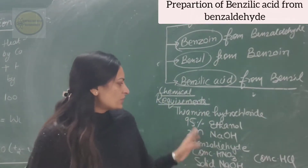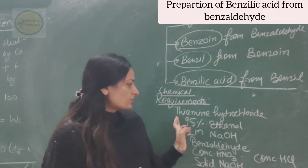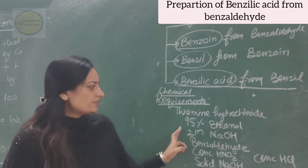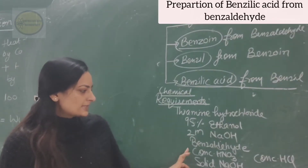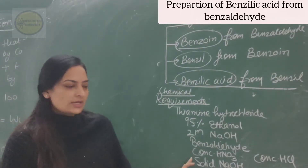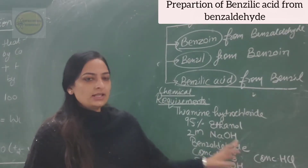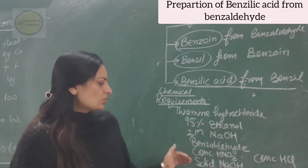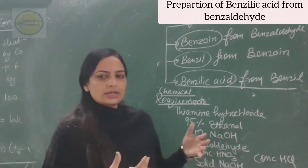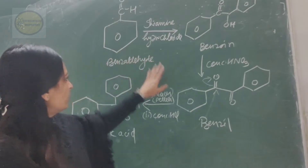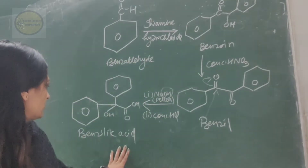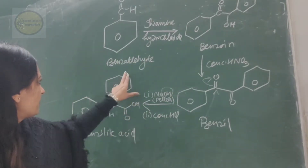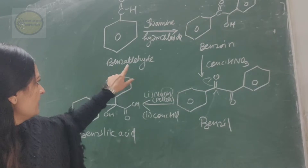The basic requirements for this preparation are: thiamine hydrochloride, 95% ethanol, 2 molar NaOH, benzaldehyde, concentrated nitric acid, concentrated HCl, and solid NaOH pellets. This covers the whole reaction for the formation of benzilic acid from benzaldehyde.